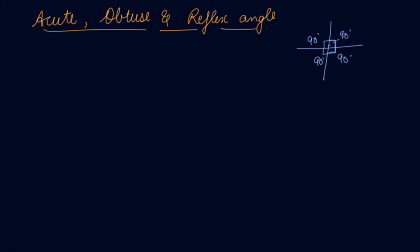Some angles might lie in between, some might lie here, or here. So in that case we have divided the angles into three types. Number one is the acute angle.